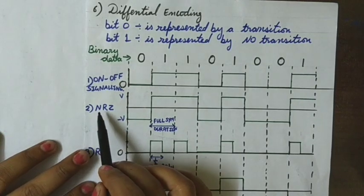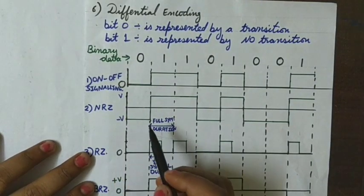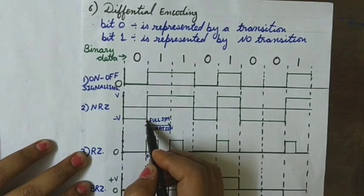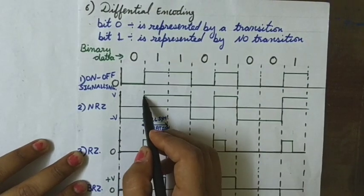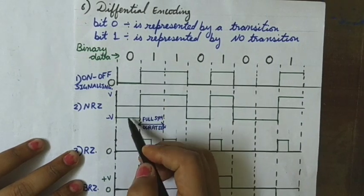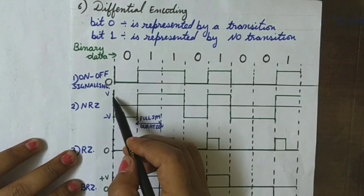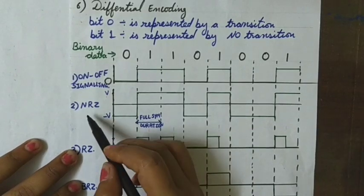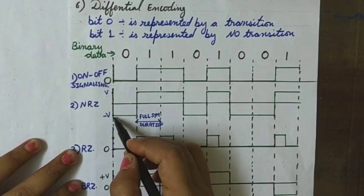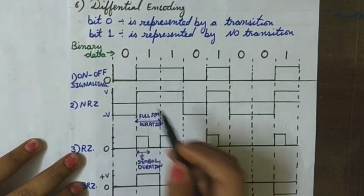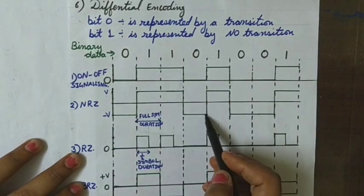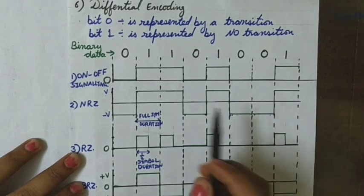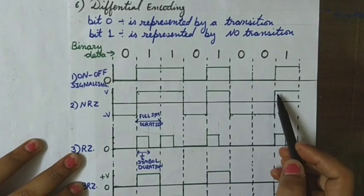In the second, that is the NRZ line coding scheme, zero is shown by a negative pulse and one is shown by a positive pulse, and both the positive and negative pulses are of the same amplitude. For one I have used plus V and for zero I have used minus V. This is called non-return to zero since it is not stopping at the zero line but moving from minus V to either plus V or vice versa. Wherever there is a one it is of plus V amplitude.